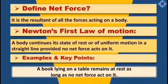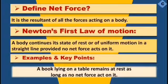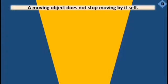Let's discuss some examples and key points. First example: a book lying on a table will remain at rest as long as no force is applied on it — no one moves it. Second example: a moving object does not stop moving by itself. A moving car will keep moving until some force is applied to stop it.